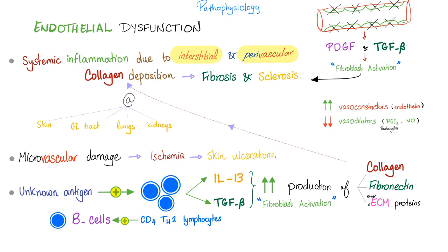Pathophysiologically, scleroderma is endothelial dysfunction — the most important two words here. Endothelial dysfunction, and then you have collagen everywhere. Fibroblasts make the collagen. Collagen deposition everywhere leads to interstitial and perivascular fibrosis and sclerosis everywhere.